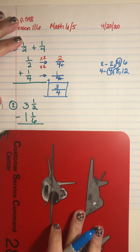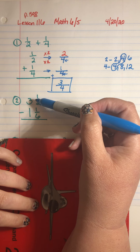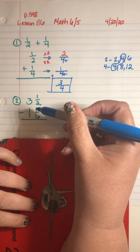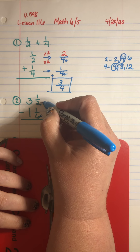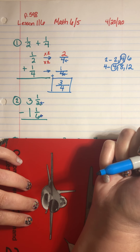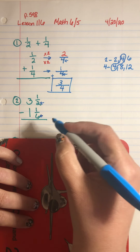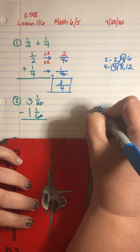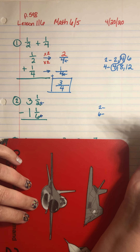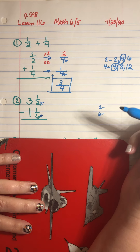Let's look at another. I have the mixed number three and one half minus the mixed number one and one sixth. So I look at my denominators — even on a mixed number, I'm looking at the fraction denominators. I have a two and I have a six. They are not the same, so I cannot subtract. So I have to come over and write out my multiples again. If you don't have to do this step, that's fine — but if you do, that's fine also.